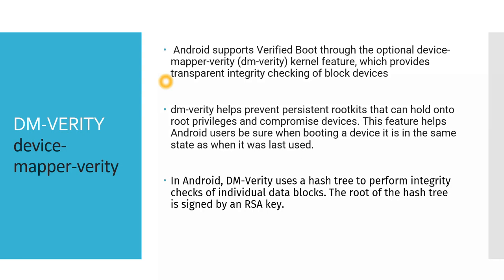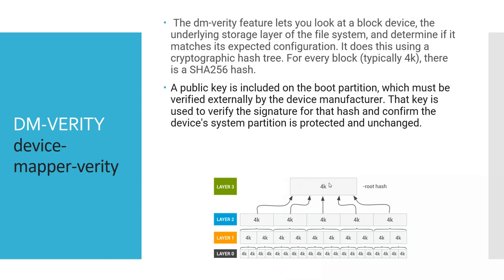DM Verity also helps prevent persistent rootkits that can hold root privileges. DM Verity uses a hash tree to perform integrity checks of individual data blocks. The roots of these hash trees are signed with RSA keys. The DM Verity feature lets you look at a block device — the underlying storage layer — and tells you if it matches the expected configuration. The cryptographic hash tree checks the signature.